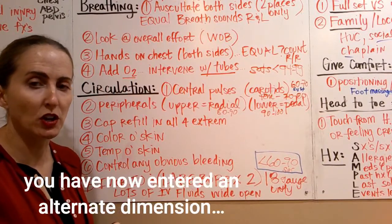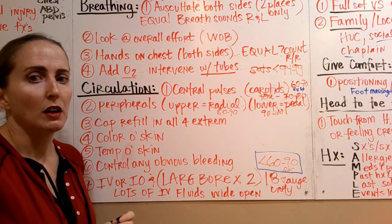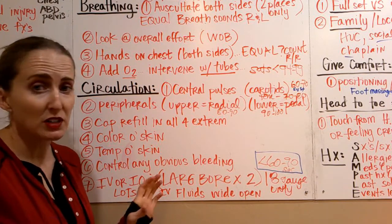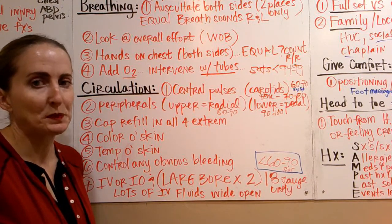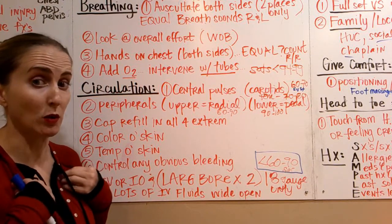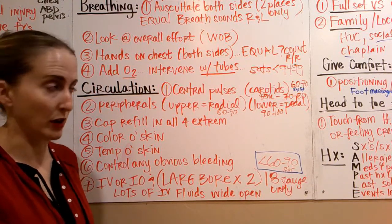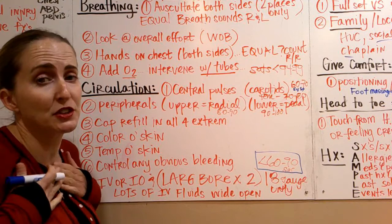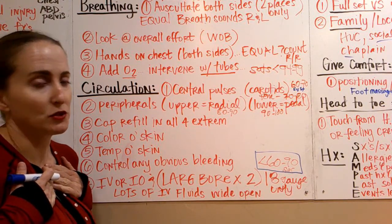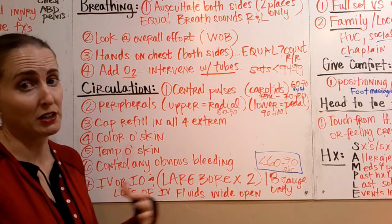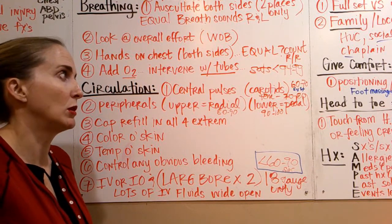Auscultate two places — one side each, left and right. This is not a detailed lung assessment; we're just quickly checking in five seconds or less: do they have breath sounds on both sides and are they equal? Look at their overall effort or work of breathing. Put your hands on their chest at the same time to make sure it's rising equally. Add oxygen and intervene appropriately — we might need to do intubation, a needle decompression if they've got tension pneumo, or put in a chest tube.